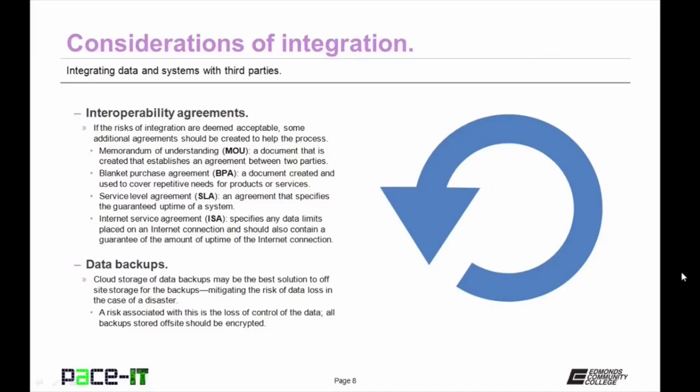Then you need to consider the interoperability agreements. If the risks of integration are deemed acceptable, some additional agreements should be created. There should be a memorandum of understanding, establishing an agreement between two parties. Another document that might be needed is a blanket purchase agreement, covering repetitive needs for products or services. There should be a service level agreement, or SLA, specifying the guaranteed uptime of a system. Finally, there may be a need for an internet service agreement specifying data limits and uptime guarantees.